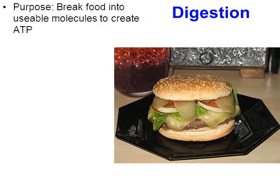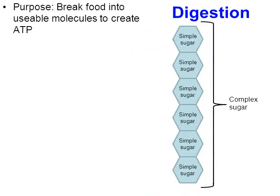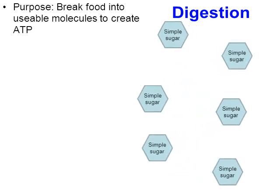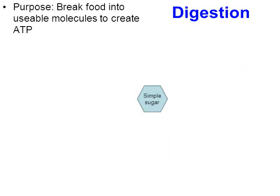When we look at the process of digestion, think about its purpose: it simply breaks the food we've eaten into usable molecules. Those usable molecules will then help create ATP. For example, inside a hamburger there are complex sugars — called polysaccharides — made up of smaller, simple sugars called monosaccharides. Through digestion, that complex sugar gets broken down into its simple sugar components. Through the breakdown of one simple sugar like glucose, ATP is going to be created.